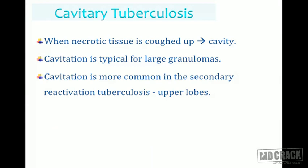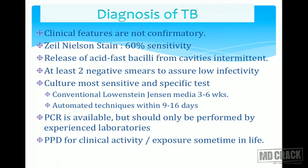Cavitary tuberculosis occurs when the necrotic tissue is coughed out, forming a cavity classically seen on chest X-rays. Cavitation is typical for large granulomas, more common in secondary reactivation of tuberculosis, and especially seen in the upper lobe of the lungs.